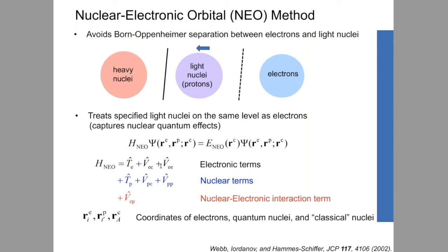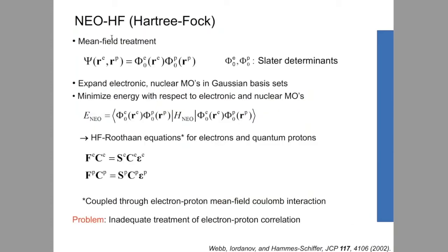To solve for solutions under the NEO method, the simplest approximation we can make is the Hartree-Fock approximation, where we treat the NEO wave function as a product of Slater determinants for electrons and protons. We expand electronic and nuclear molecular orbitals in Gaussian basis sets and minimize the NEO energy with respect to electronic and nuclear molecular orbitals with constraints of orthonormality. This gives a coupled Hartree-Fock-Roothaan equation for electrons and quantum protons, coupled through a mean-field electron-proton Coulomb interaction.